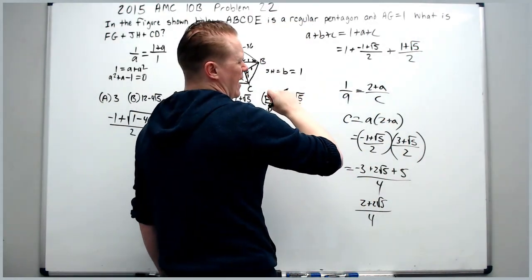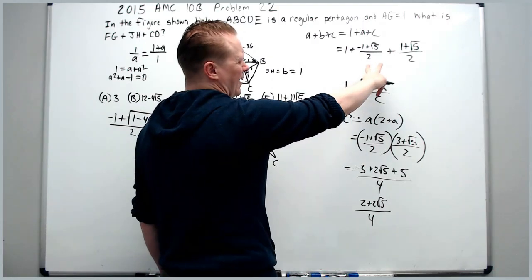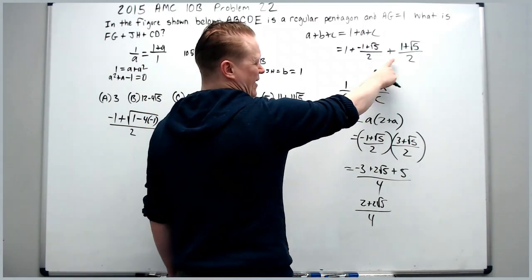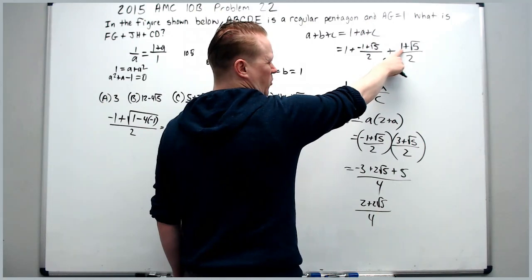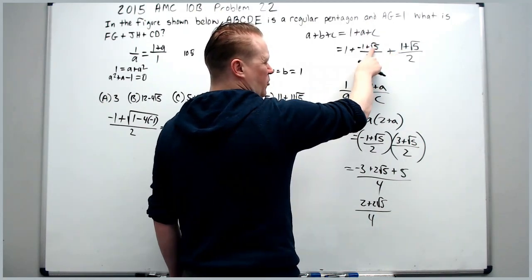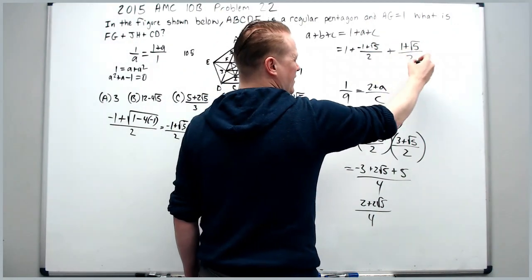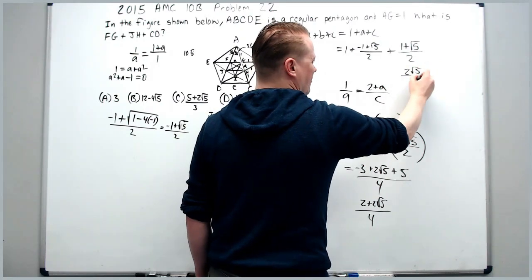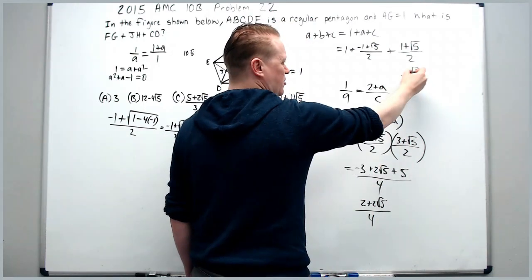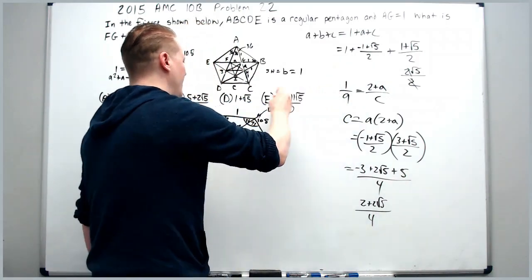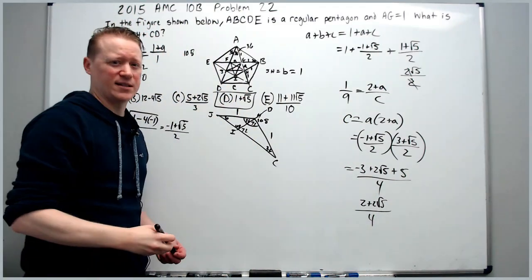So now, we can add this all together. If I add these two, the negative one and the one are going to cancel. I'm going to get root five plus root five is two root five over two. The two's cancel. Now I've got root five plus one. And that is answer choice D.